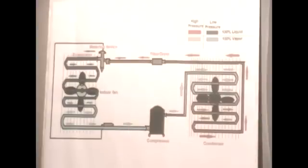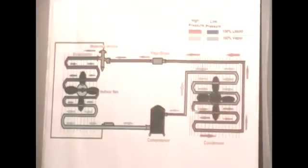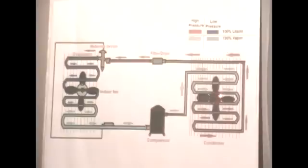Let's first look at the compressor. The job of the compressor is to compress your refrigerant from low pressure at the inlet from your suction line, and compress it to high pressure when it comes out to the discharge line. It then goes into your condenser. The condenser's job is to condense the refrigerant by releasing heat via the condenser fan motor. It changes the state from high pressure, high temperature vapor to high pressure, high temperature 100% liquid.